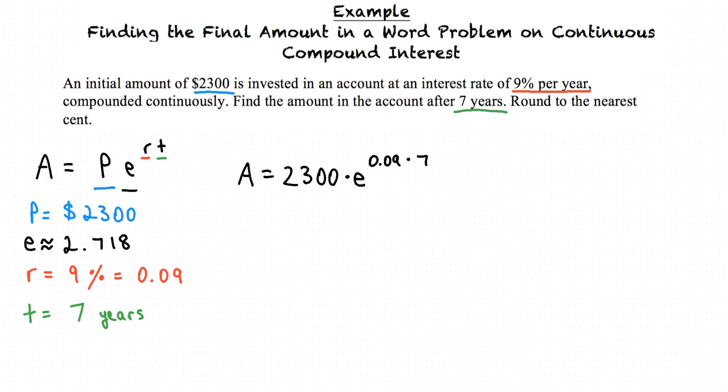We can simplify our exponent by multiplying 0.09 times 7. 0.09 times 7 is 0.63. The result is A equals 2300 times e to the power of 0.63.